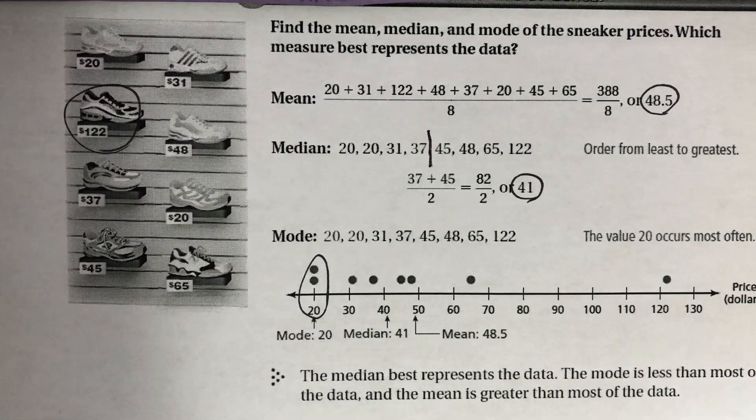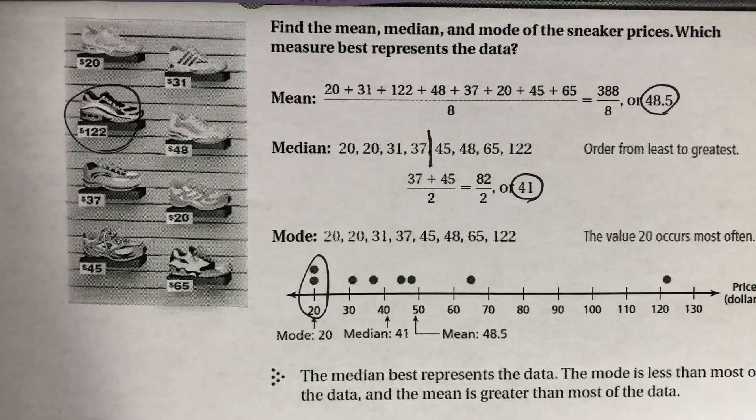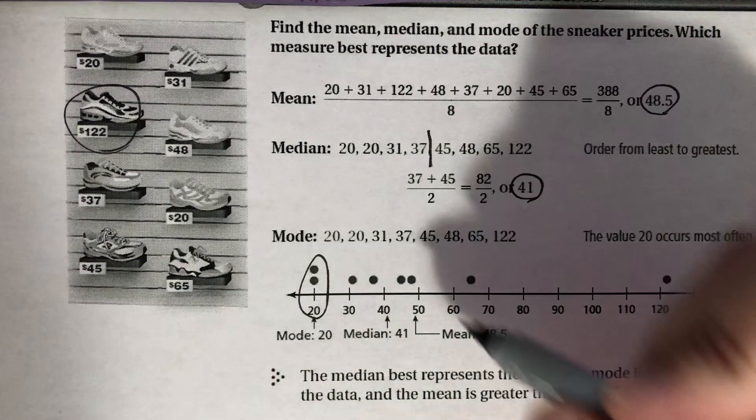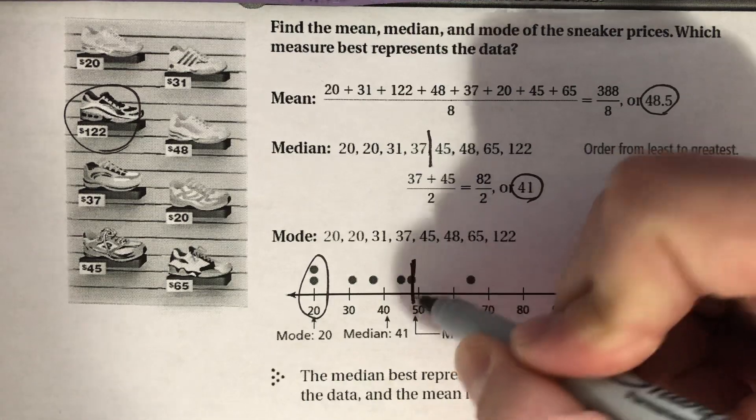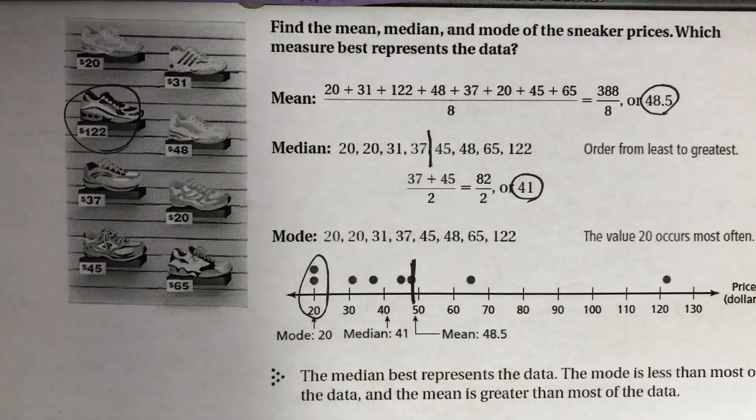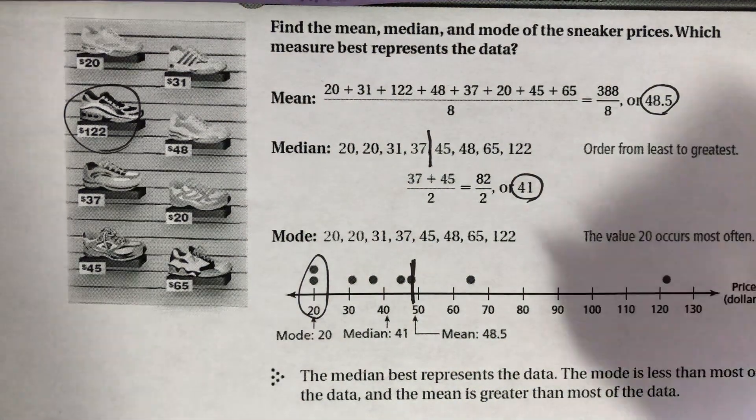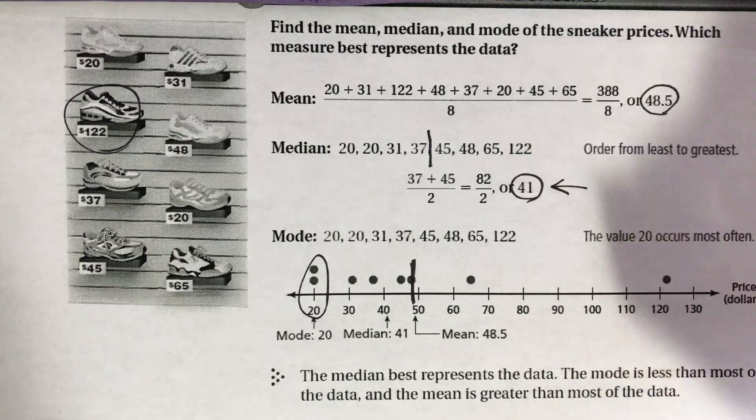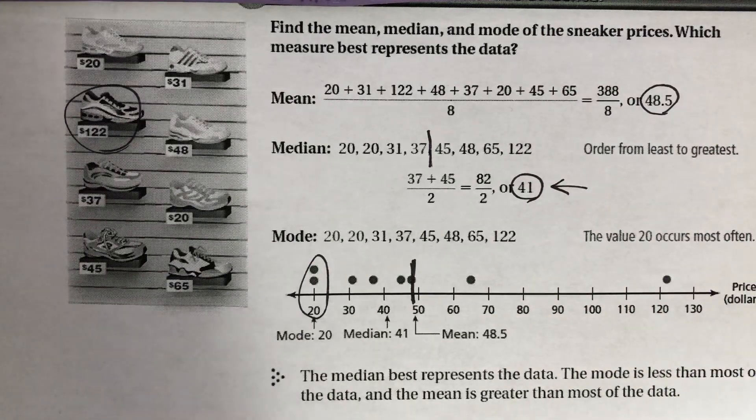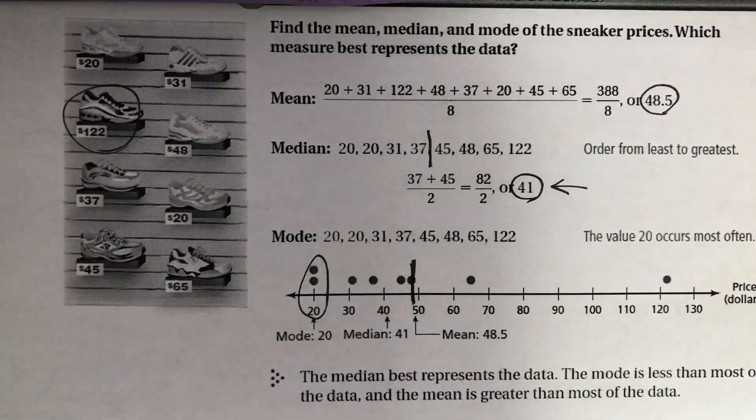So the correct answer here is the median best represents the data. The mode is way less than most of the data. And the mean is greater. I mean, if you think about it, this is where the mean would be right here. And that's not really representative of where the data cluster. So the median would be the best measure to choose when finding a measure of center for this specific question.